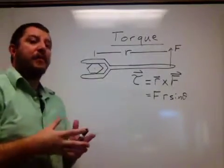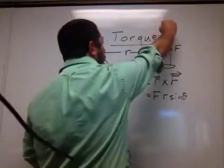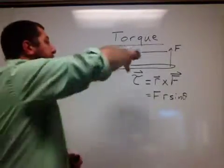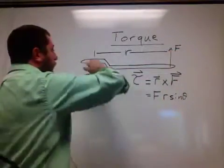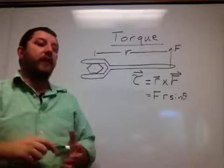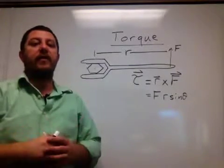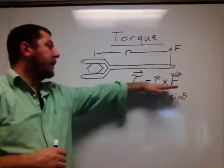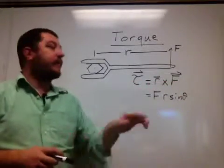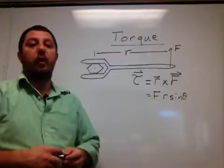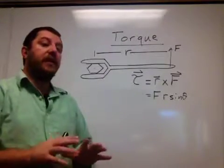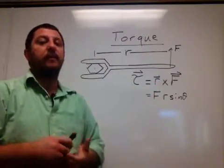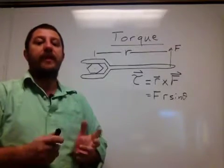In this case, the torque is coming out of the board. That makes sense: applying an upward force on the lever arm causes the bolt to rotate and loosen — coming out of the board. If I applied a downward force instead, the bolt would twist into the board and tighten. This illustrates how the direction of the torque relates to the cross product. The cross product definition also lets you get the components and thus the direction directly.